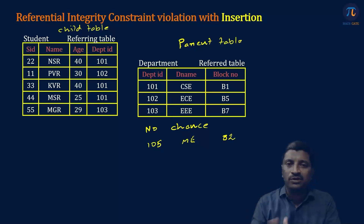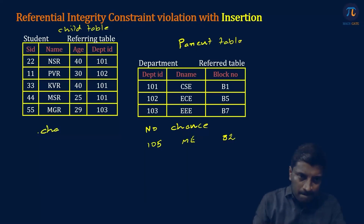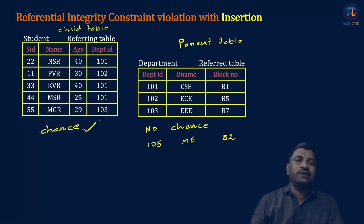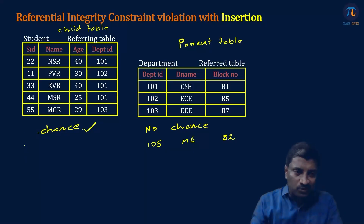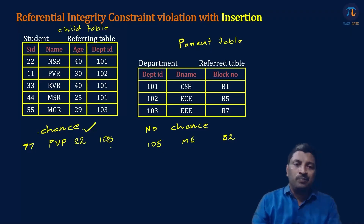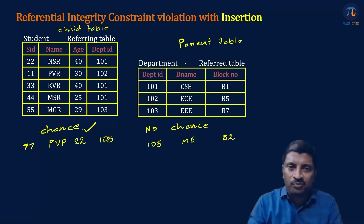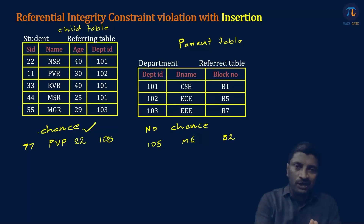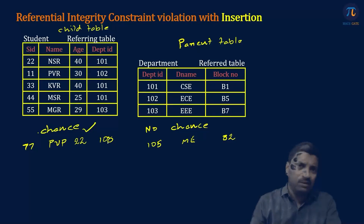But if we insert records in the child table, there is a possibility of violation of referential integrity constraint. For example, suppose I am trying to insert a record with values 77, PVP, 22, and department ID 108. But if we observe, 108 is not available in parent table, so it is violating our constraint. When we insert a record in parent table there is no chance for violation, but when coming to child table, there is a possibility of violation. It doesn't mean it always violates — if instead of 108 I had written 101, there is no violation, since 101 is available.